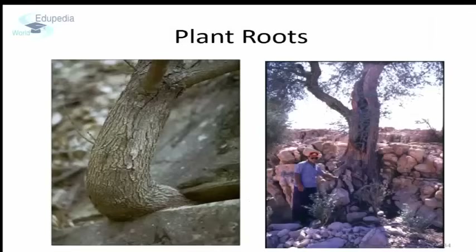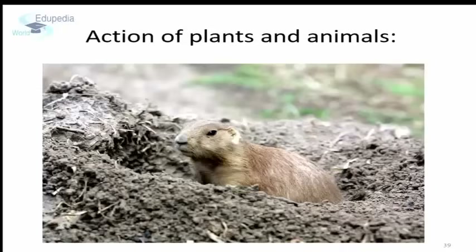Plants: When plants are young, their roots barely penetrate through the soil, but as these plants grow into trees, their roots become stronger and stronger and penetrate through the underlying rock, breaking it apart. Extensive burrowing by rodents may loosen the soil, which may be easily eroded, exposing the underlying rock to further weathering. Furthermore, these burrows may be filled with water during rain, causing the overlying rocks to collapse.